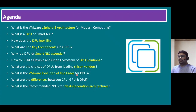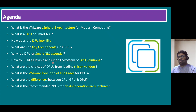Before understanding the evaluation of use cases for DPU, we need to cover a few basic concepts. First, we'll quickly recap VMware vSphere 8 architecture for modern computing and what is a DPU or Smart NIC — another name is Smart Network Interface Card. We'll look at DPU components, why it's essential, how to build a flexible ecosystem, vendor choices, and compare CPU, GPU, and DPU. Finally, we'll look at recommended processing units for next-generation architectures. These 10 key points we'll discuss now.